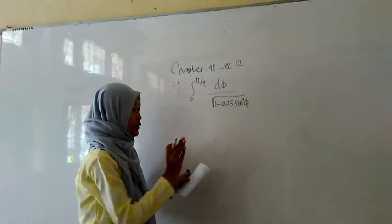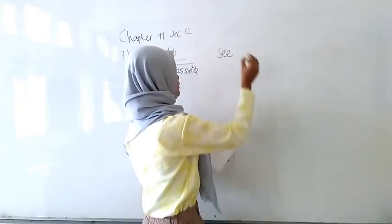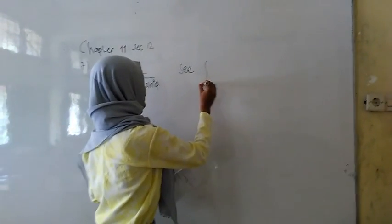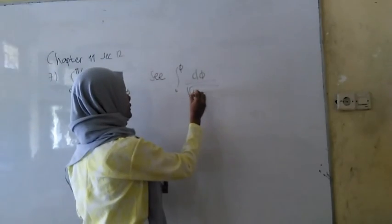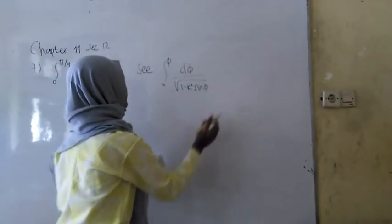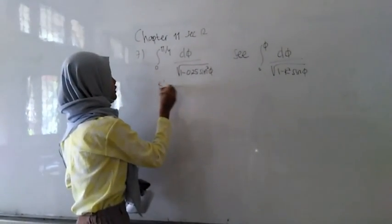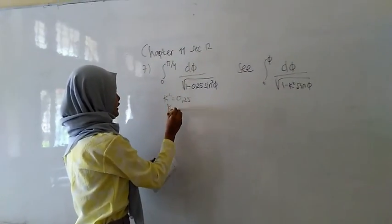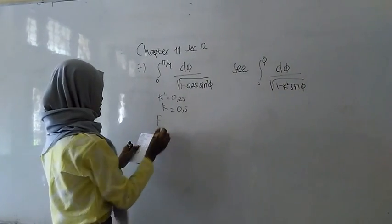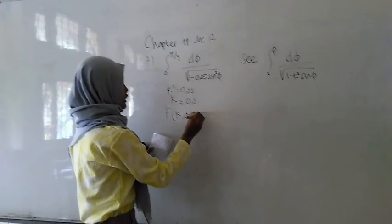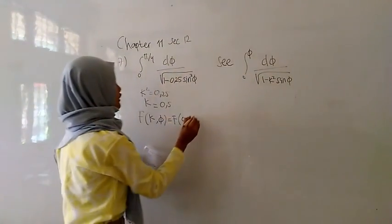From this problem, we will find the value of the elliptic integral in the ground. We see this equation. The K squared is 0.25 and K is 0.5. So the value in the ground is F(K, C) equal to F, where K is 0.5 and C is φ/4.